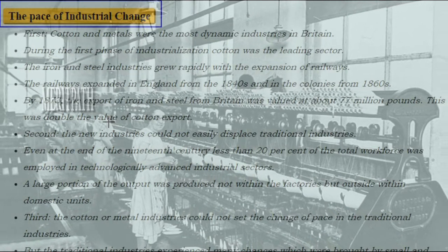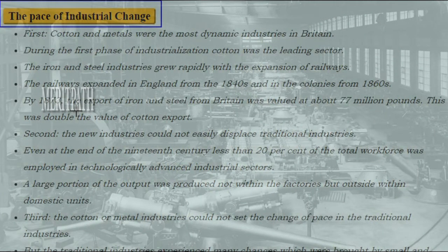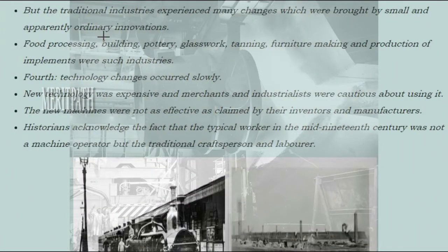During the first phase of industrialization, cotton was the leading sector. The iron and steel industries grew rapidly with the expansion of railways. By 1873, the export of iron and steel from Britain was valued at about 77 million pounds — double the value of cotton exports. New industries could not easily displace traditional industries. Even at the end of the 19th century, less than 20% of the total workforce was employed in technologically advanced industrial sectors. A large portion of output was produced not within factories but outside in domestic units. Cotton or metal industries could not set the pace of change in traditional industries, but traditional industries did experience changes brought by small and apparently ordinary innovations.